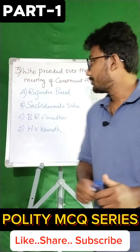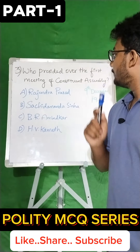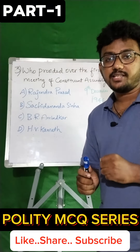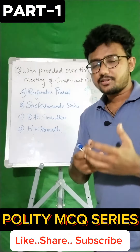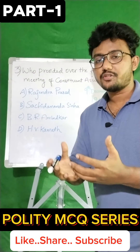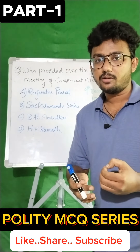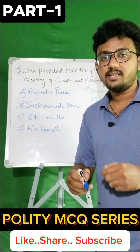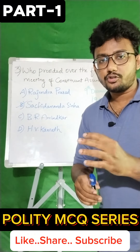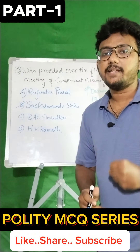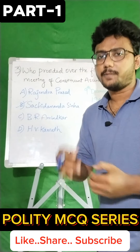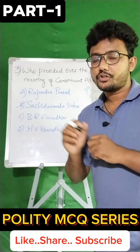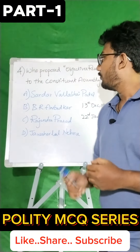Let's move to the third question. Who presided over the first meeting of the Constituent Assembly? The first meeting of the Constituent Assembly was on 9th December 1946. Generally, people think the answer is Rajendra Prasad, the first President of India. But the correct answer is Option B: Sachidananda Sinha, the oldest person in the Constituent Assembly. This follows French practice — the oldest person is elected as temporary President. So Sachidananda Sinha was the first President of the Constituent Assembly.